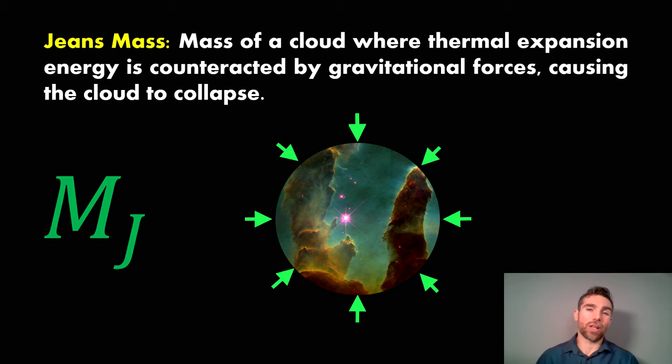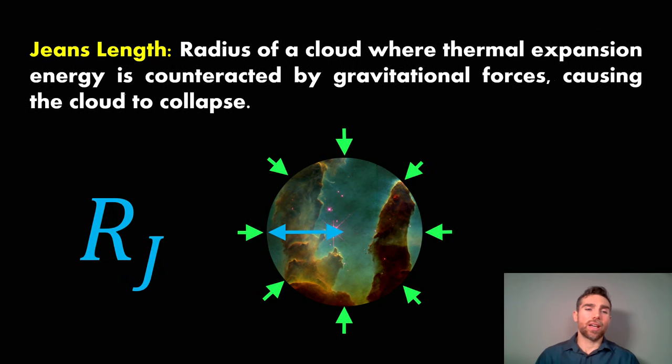The Jeans length is the same thing but it's the radius of a cloud where, if it's greater than this, you're going to get a gravitational collapse. It's useful for getting an approximation of the size of cloud where you may end up with a collapse. It's pretty rough but gives us a general idea.